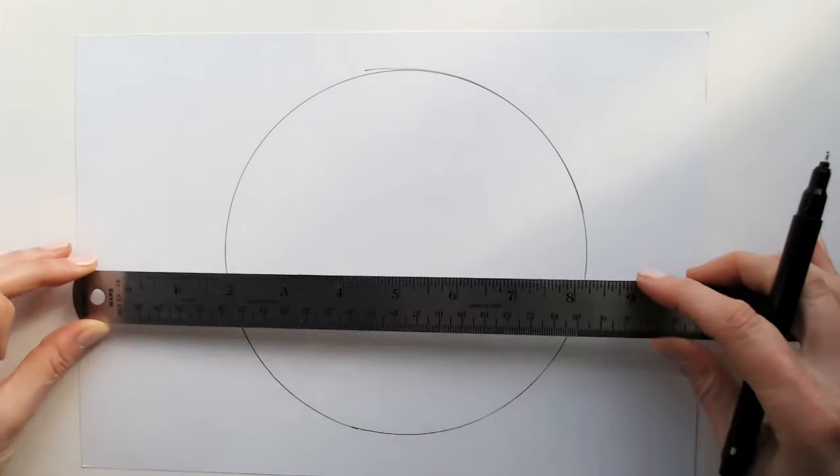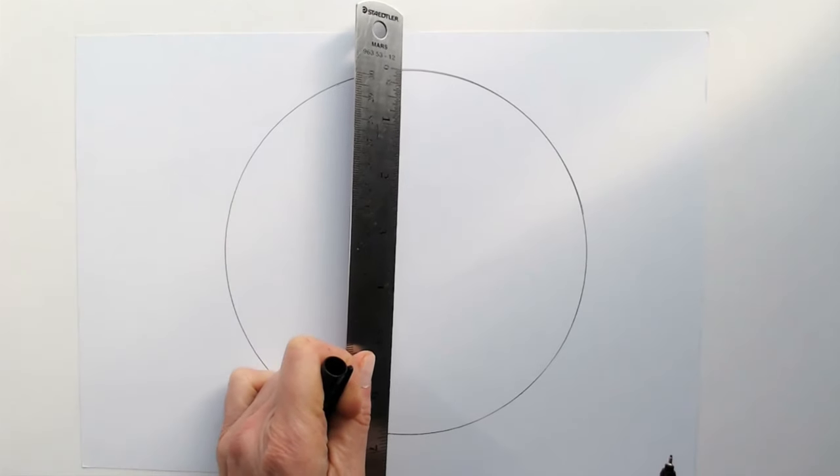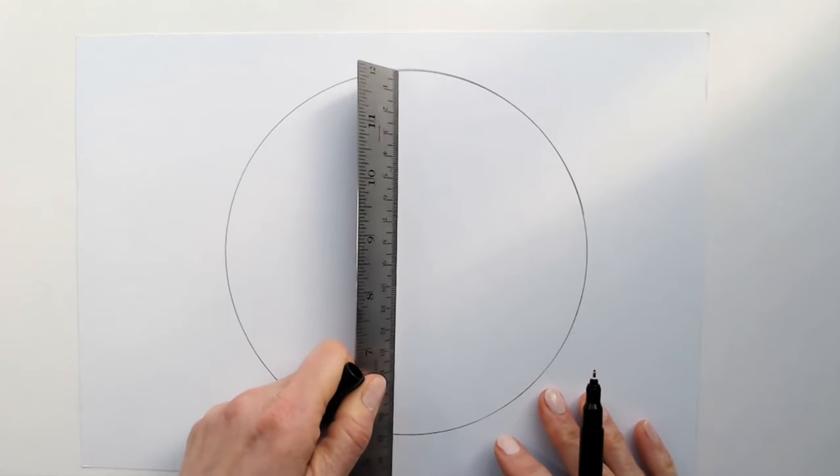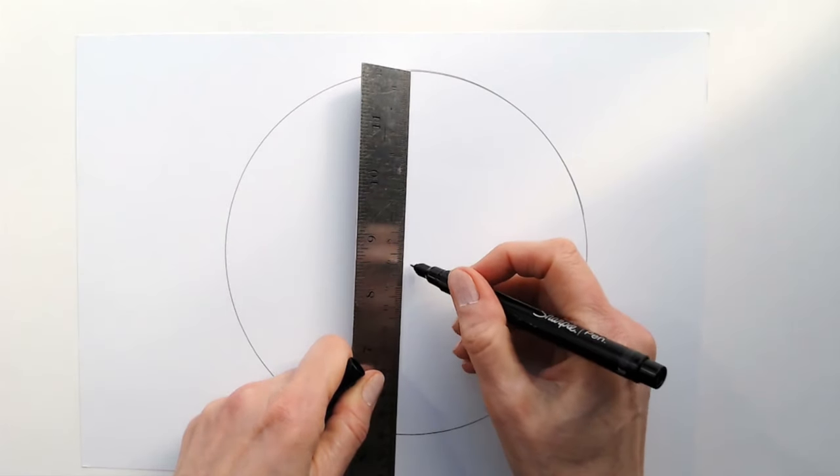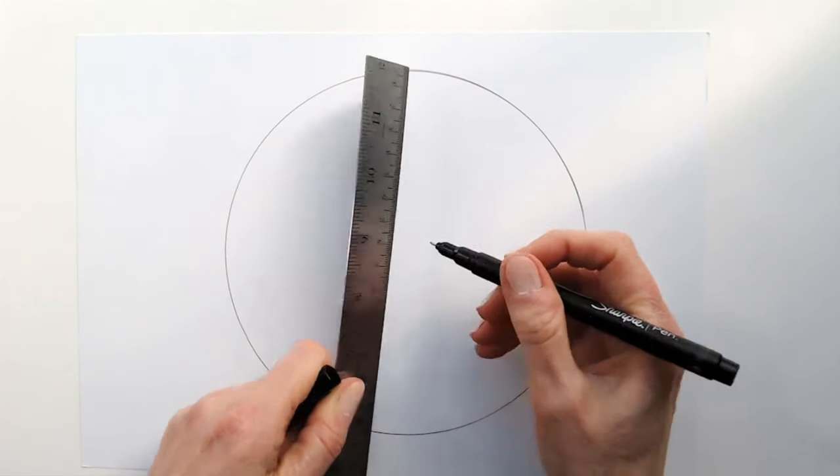Then we have a circle and we need to find the central points. So we'll measure about a half. Seven and a half. Eight and a half. One center, and the center.